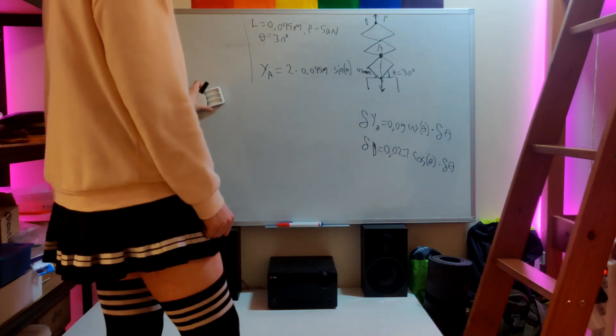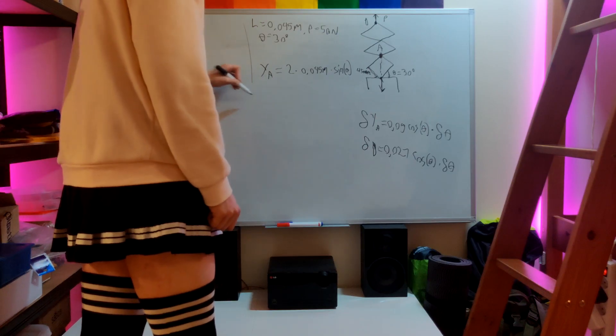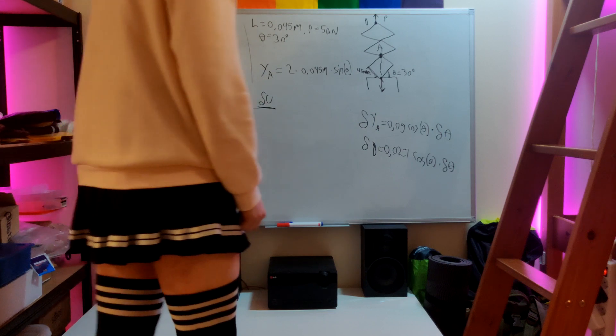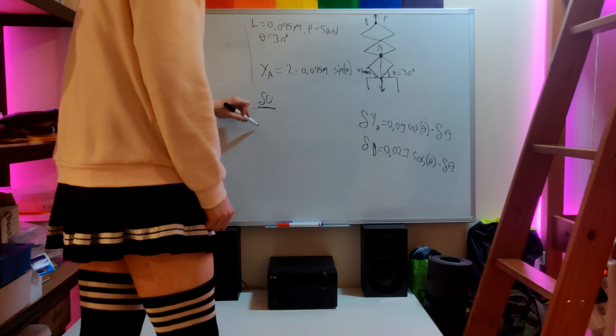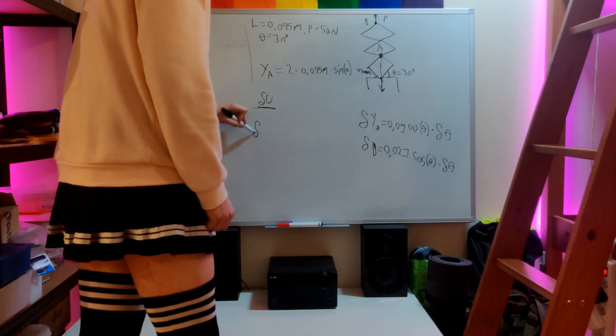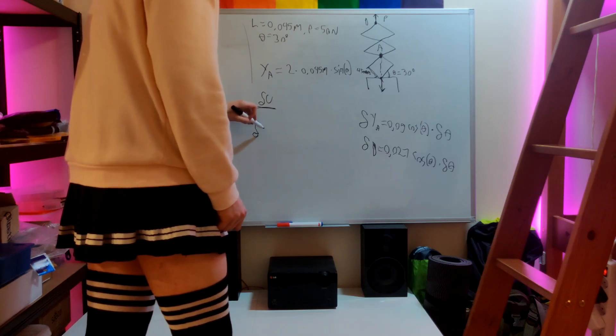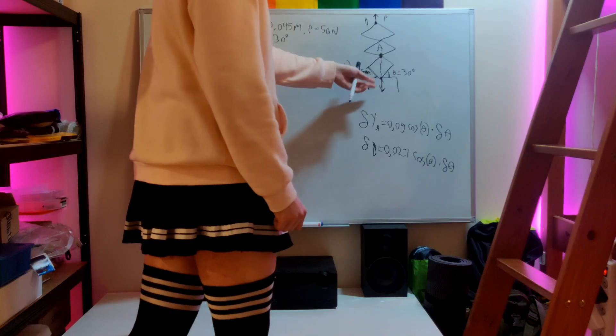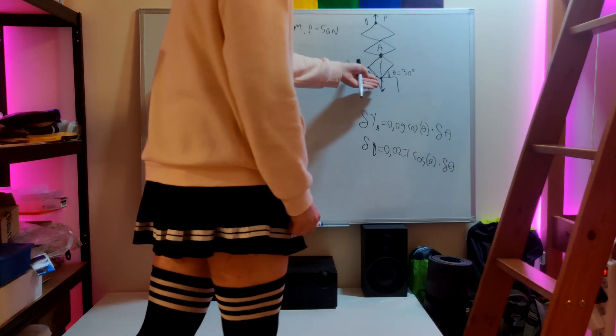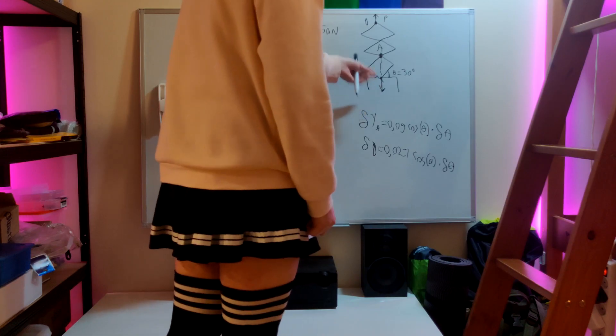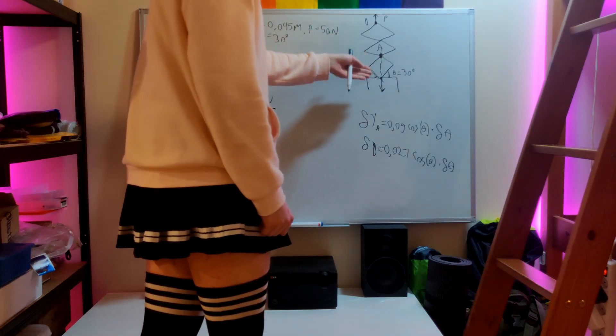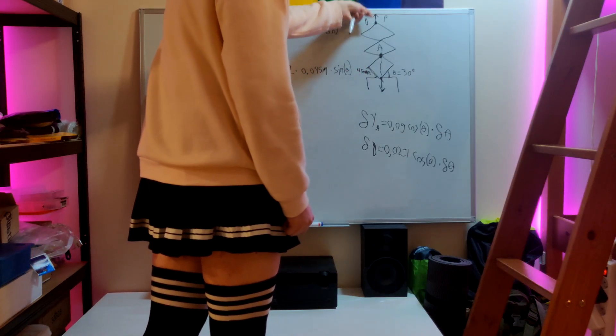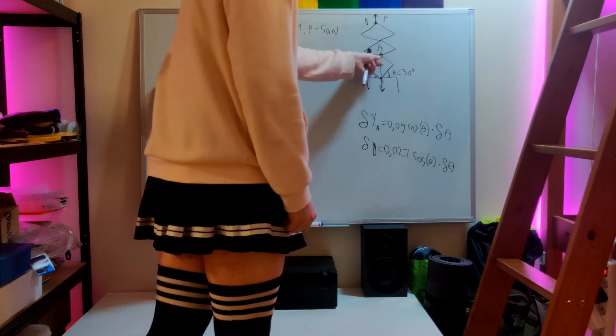So we can write the equation for virtual work. Because it's a scissor mechanism, it has to be in equilibrium because of the third law of Newton, which says that every action must have an equal and opposite reaction. So this virtual work can't be higher than this virtual work of point A.